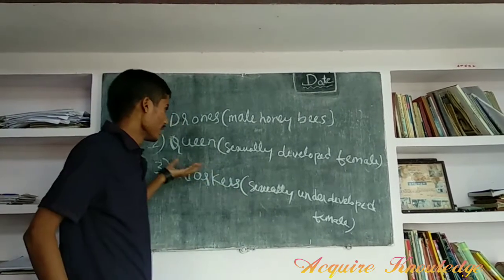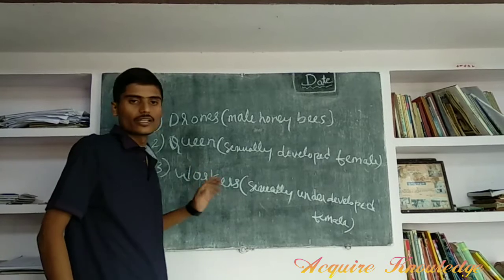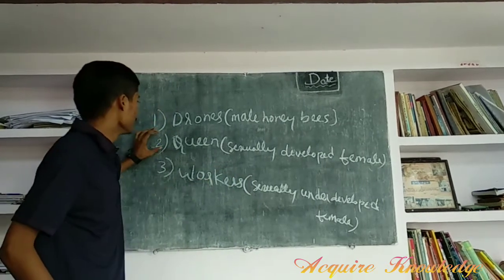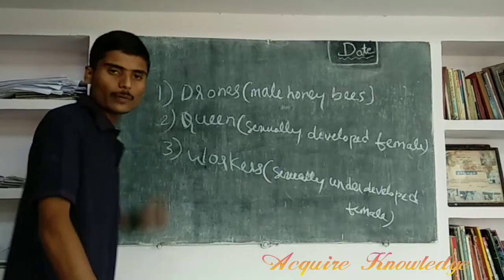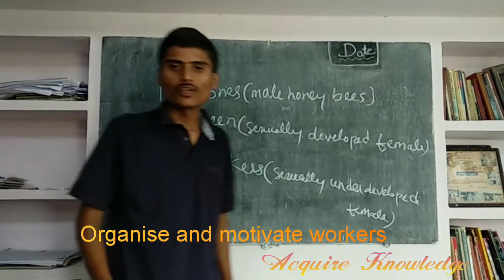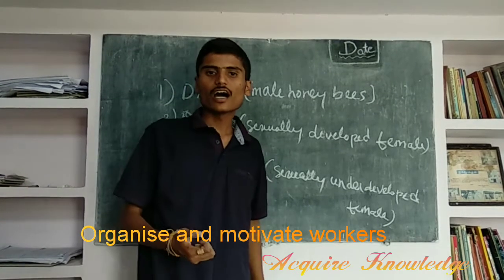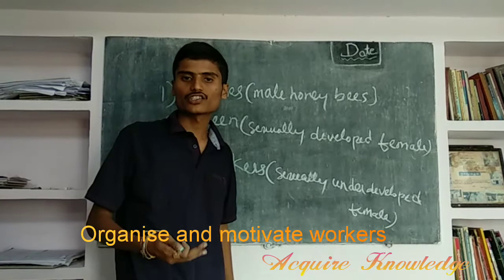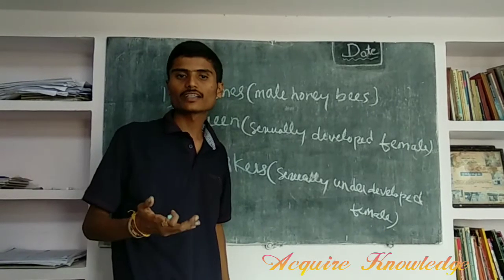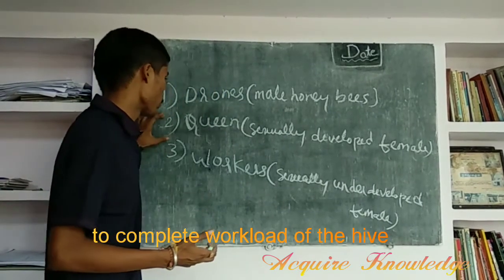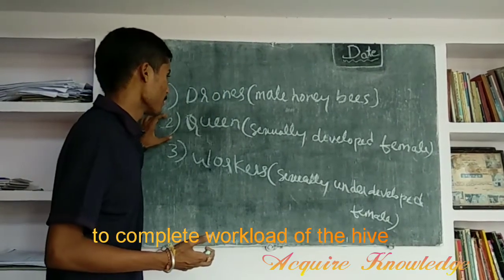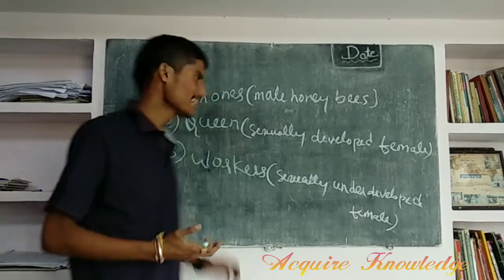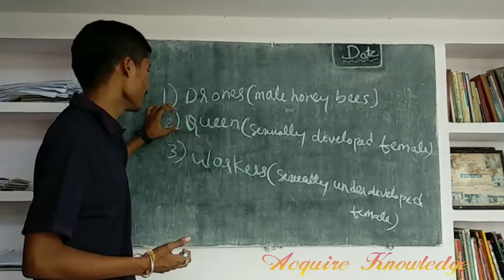After that, the queen reproduces throughout her remaining lifespan. The second purpose of the queen is to organize and motivate the workers to complete the workload of the hive.